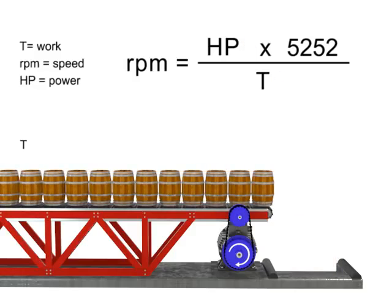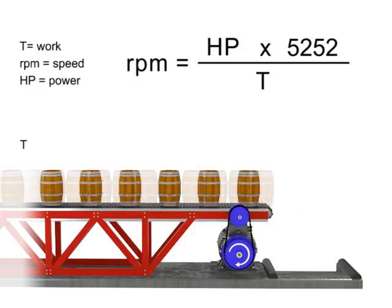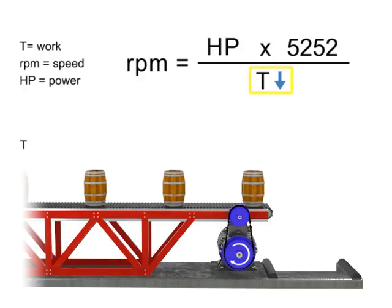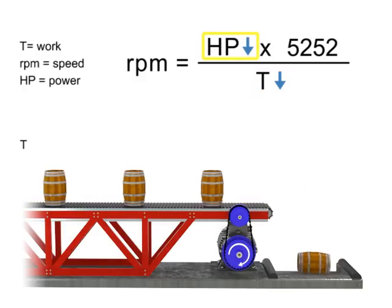Similarly, the opposite is true. If we wish speed to remain constant and decrease torque, then horsepower also decreases.